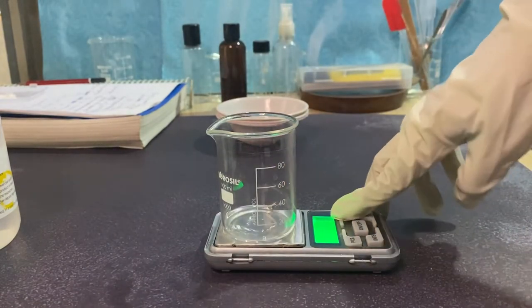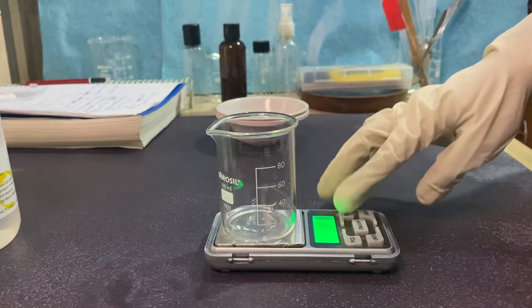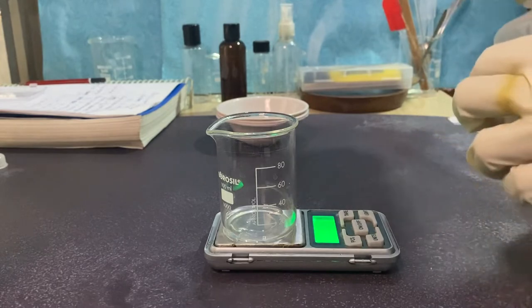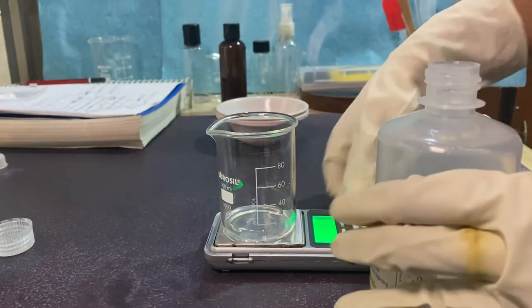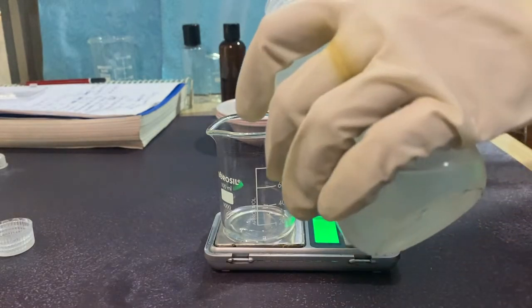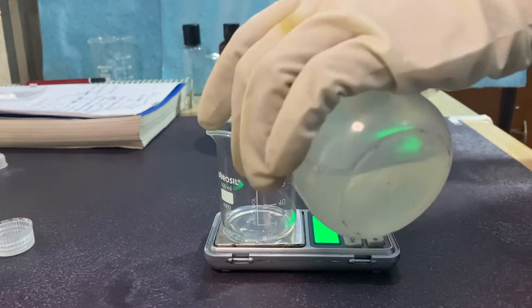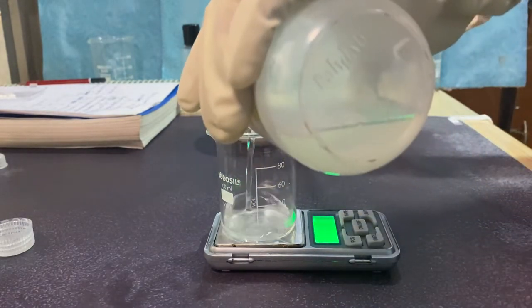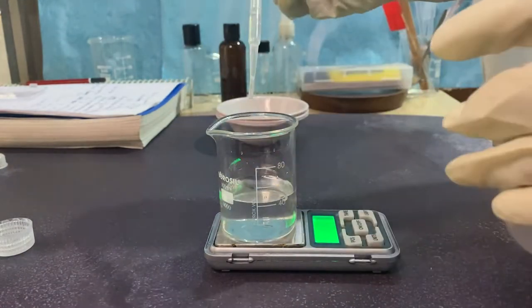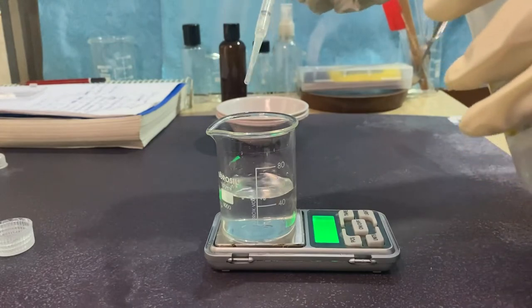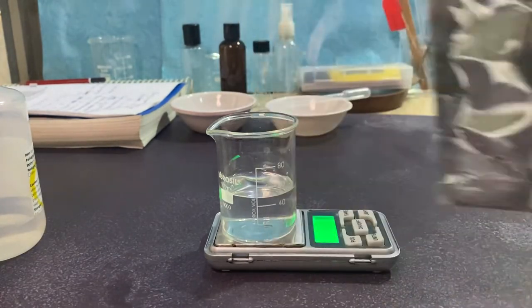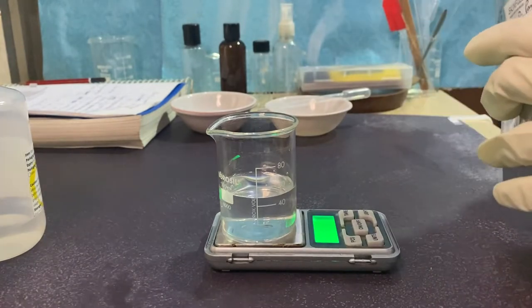I'll tare the scale. Next goes the rose hydrosol of 43.95 grams. You can use a different one instead of rose hydrosol. The next one is panthenol of 0.25 grams.